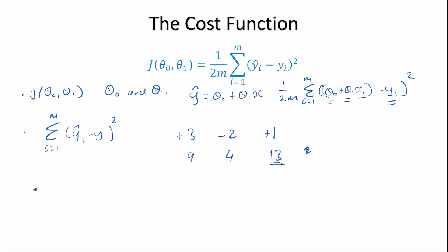Lastly, we divide the sum of squared errors by 2m — that is, multiply by 1 over 2m — to get an average of the overall errors, making the total error more readable and allowing easier comparison between different linear regression models. For example, with errors of 9 and 4 for two observations, we divide 13 by 2 times 2, giving 13 over 4, which is roughly 3.25.